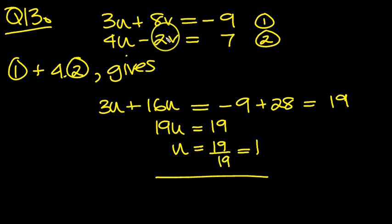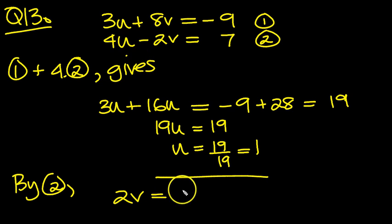Now let's get v, so by 2 then, that's the easiest one to deal with. Move that 2v over there, leave the 4u on that side, the other side, and move the 7 across to be with it, so it becomes minus 7.